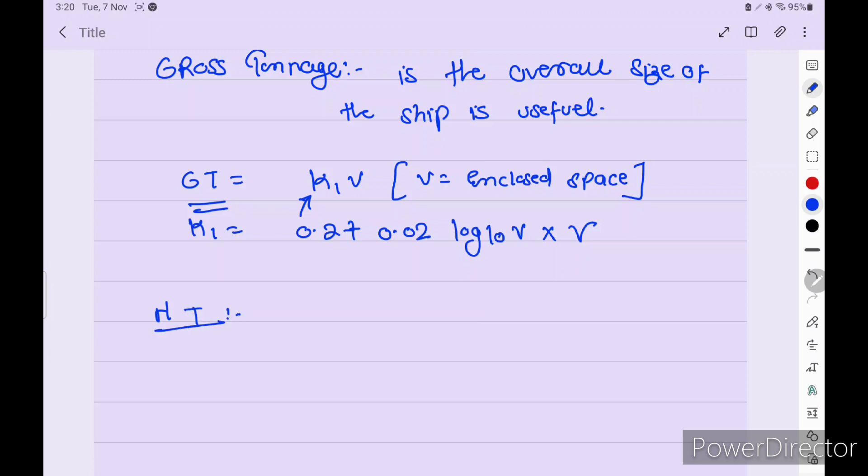Net tonnage formula is k2 into V2, 4d upon 3D squared, plus k3 bracket N1 plus N2 divided by 10. This is for the passenger enclosed space.